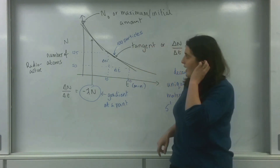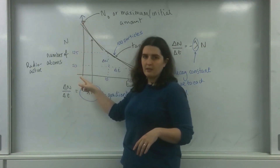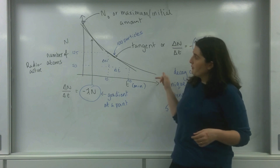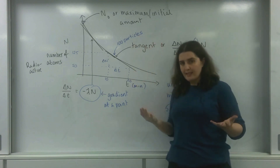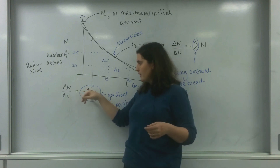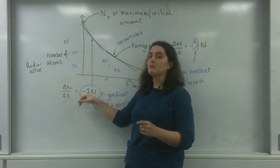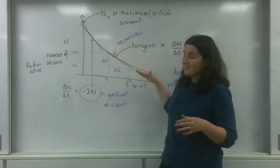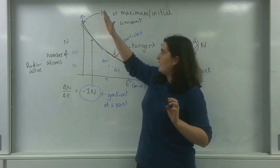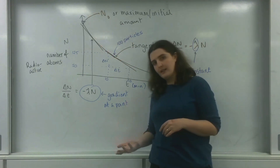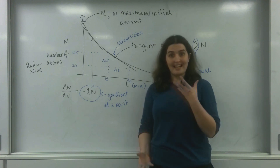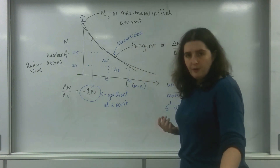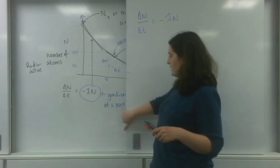On the board behind me I have a graph of the number of radioactive atoms in a substance versus time. I spoke about the fact that at each point the gradient was this: the gradient of the line was minus lambda — the decay constant of the material — times the number of particles at that point. That was constant throughout, and I noticed that this decay constant was constant. So the gradient of the line is represented by this formula here.